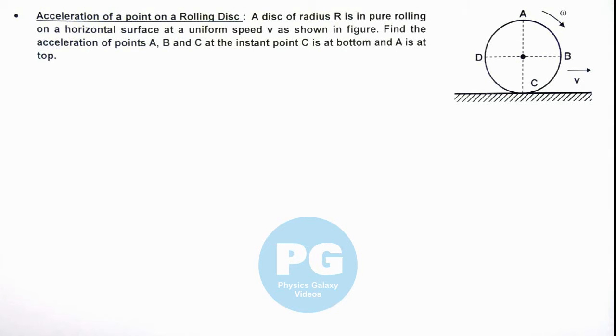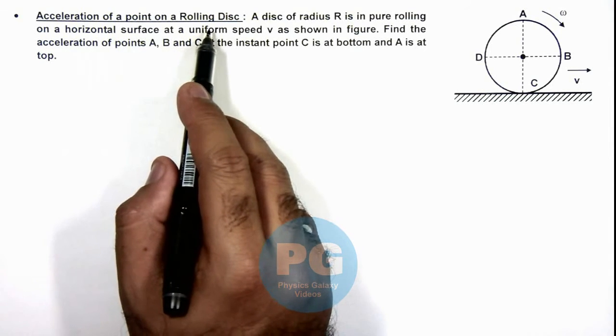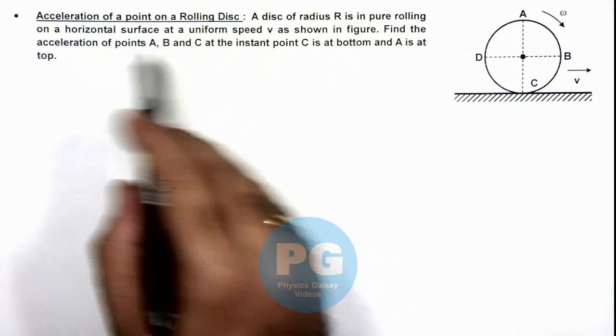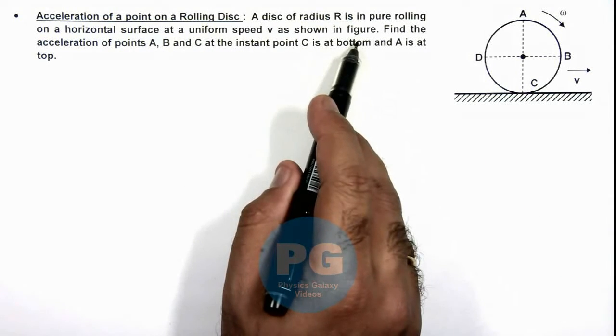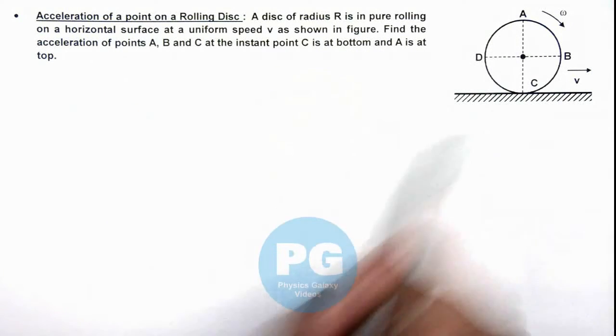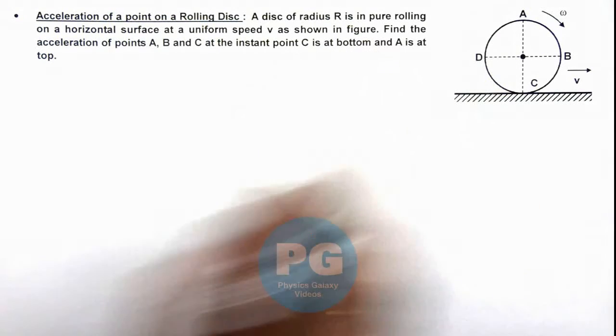In this illustration, we'll analyze the acceleration of a point on a rolling disc. Here we are given that a disc of radius R is in pure rolling on a horizontal surface at a uniform speed v as shown in figure. And we are required to find the acceleration of points A, B and C at the instant point C is at the bottom and A is at the top.